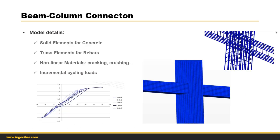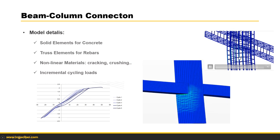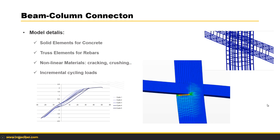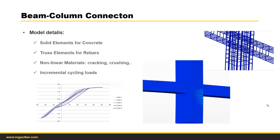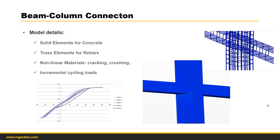Another example is a beam-column connection, which is a D-region. Incremental cycling loads are applied at the bottom of the beam connection to analyze the damage accumulating each cycle and the final behavior leading to collapse. These incremental cycling loads on the column are very useful for seismic design. In the video, cracking and steel yielding are both visible occurring. With these detailed models we can design D-regions and obtain much more information, such as ductile behavior.